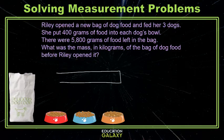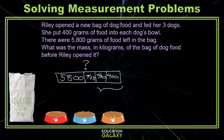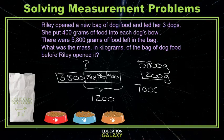We've got this bag with some unknown amount in it, and the goal is to find that amount. We know that 400 grams was poured out for each dog, and there are 5,800 grams left. We're given all of the amounts that create the unknown total, so to find a total we add. 400 grams times three dogs is 1,200 grams, and adding 5,800 grams gives us 7,000 grams.